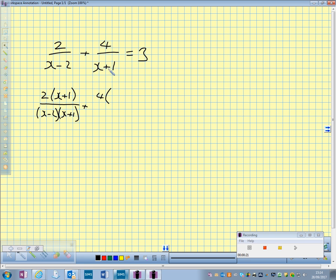Multiply top and bottom of this one by x minus 2. So it's 4 upon x minus 2 all over x minus 2, x plus 1 gives us 3.